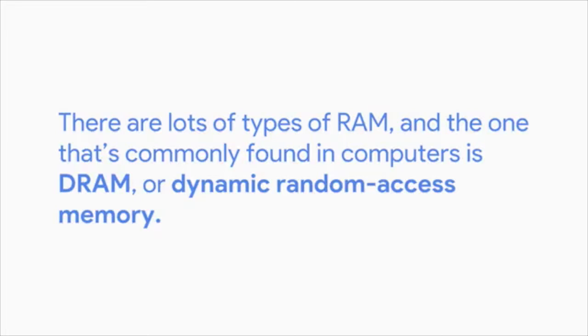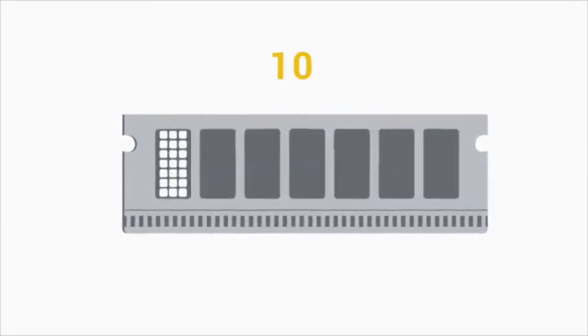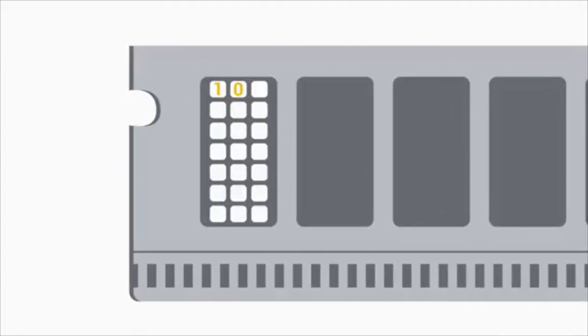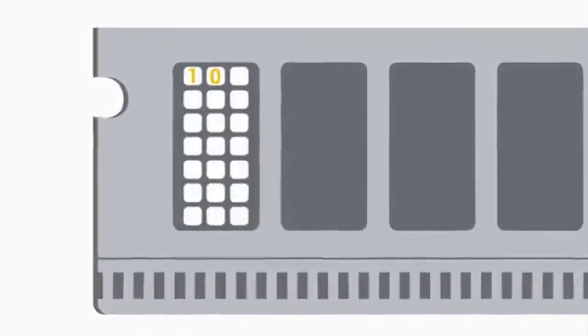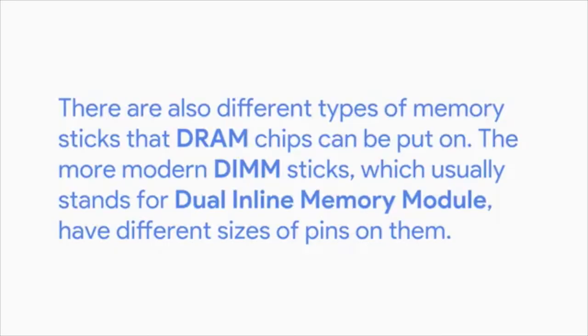There are lots of types of RAM, and the one commonly found in computers is DRAM, or Dynamic Random Access Memory. When a 1 or 0 is sent to DRAM, it stores each bit in a microscopic capacitor — either charged or discharged, represented by 1 or 0. These semiconductors are put into chips on the RAM and store our data. The more modern DIMM sticks — Dual Inline Memory Module — have different sizes of pins. RAM sticks are labeled by capacity, like an 8GB stick of RAM.